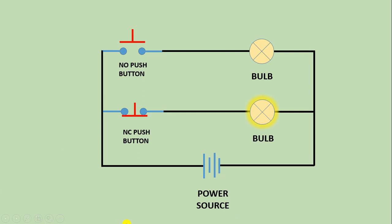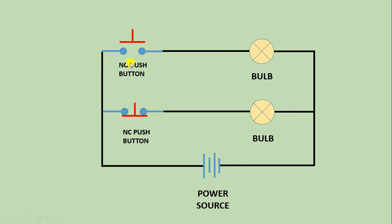After turning on the power supply, you can see this bulb connected to the NC push button is glowing, and the other one is off. This one is glowing because the circuit is complete here. If you press the NC push button, the bulb turns off. On releasing, the lamp turns on again. So if you want power supply to always flow but want the circuit to break when you press the push button, then you have to use an NC push button there.